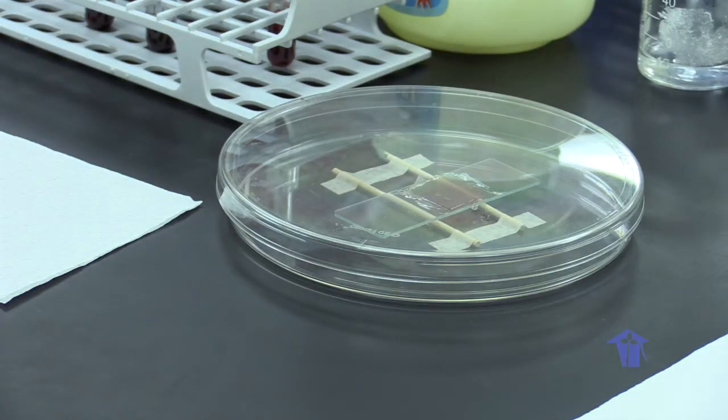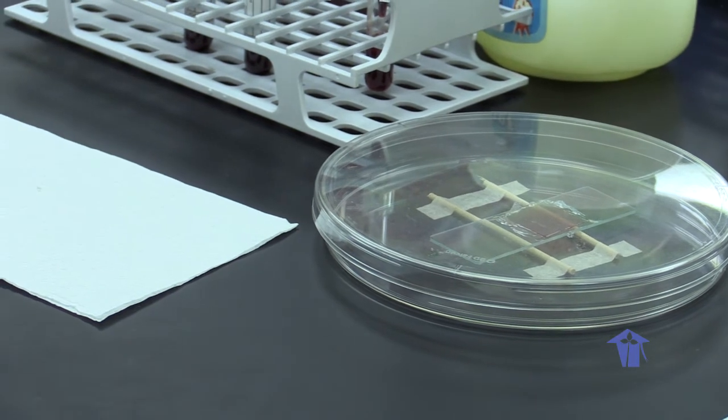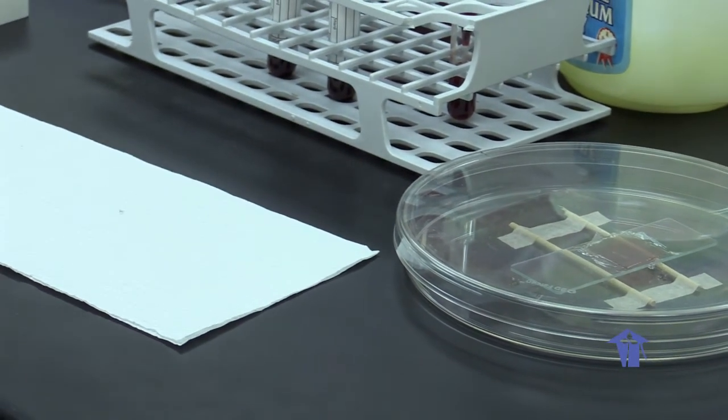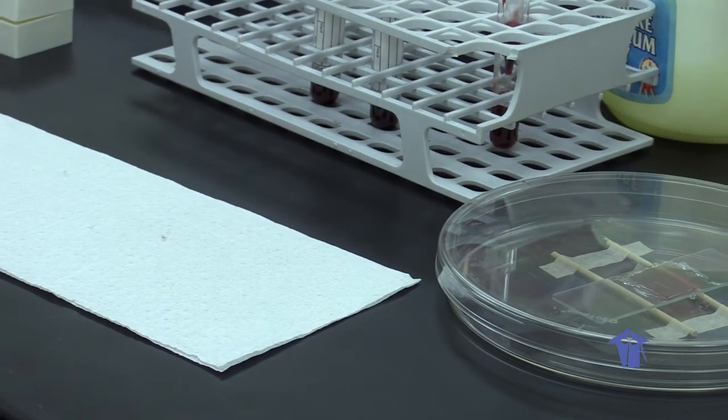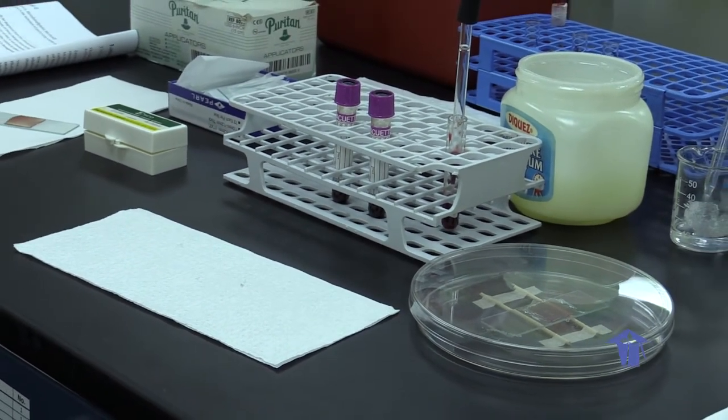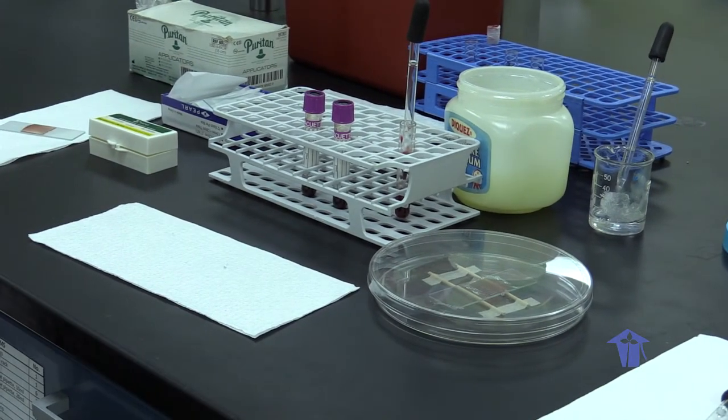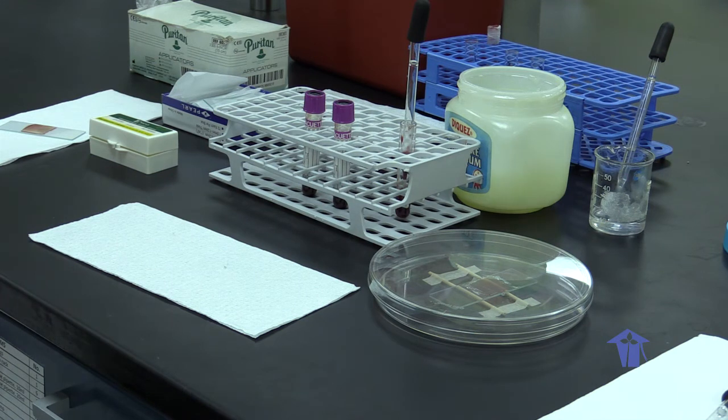One of the limitations in examining the prepared blood sample is that there are shapes of cells that may look like sickle cells and you have to be careful. Things like schistocytes, which are fragments of red cells sliced by fibrin strands, may look like sickle cells.